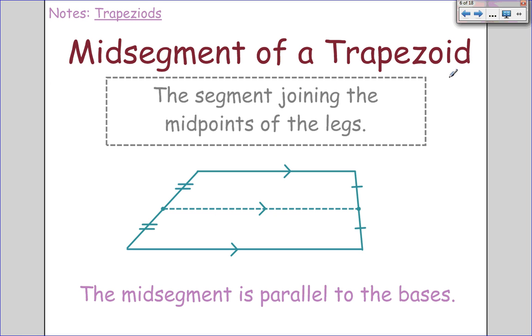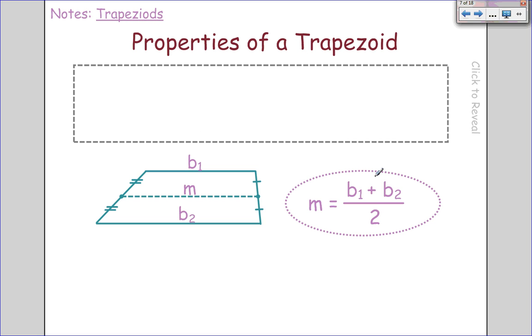Every trapezoid has something called a mid-segment. The mid-segment of a trapezoid is a segment joining the midpoints of the legs. So if I find the midpoint of each leg and connect those, I get the mid-segment. Now the mid-segment is parallel to both bases. It's exactly in between them, the middle of them, hence mid-segment. So just find the midpoint of both legs. If the video is moving too fast, please pause it.